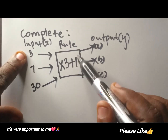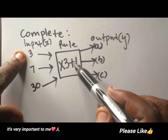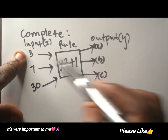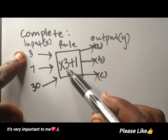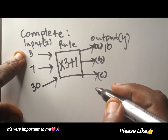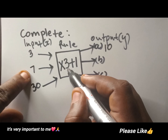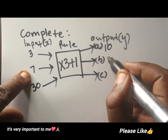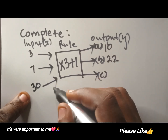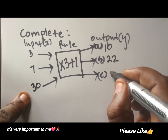The first thing is what the rule says. The rule says you multiply the input by 3 and then you add 1 to the answer, and then that is going to be your output. So 3 times 3 is 9, plus 1 is going to be 10. 7 times 3 is going to be 21, plus 1 is going to be 22. Now 30 times 3 is going to be 90, plus 1 is going to be 91.